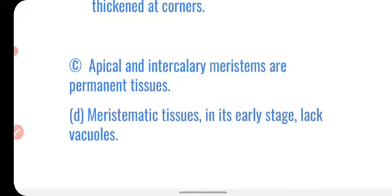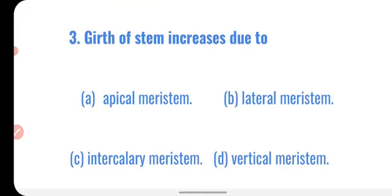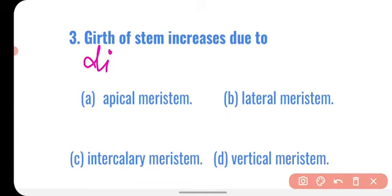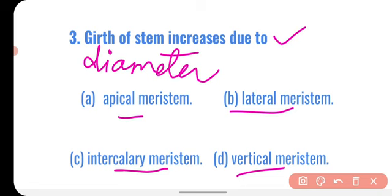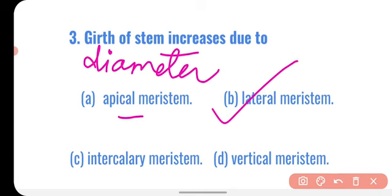Question number three: girth of stem increases due to which meristem? Options are apical meristem, lateral meristem, intercalary meristem, and vertical meristem. There are two types of growth in plants — primary and secondary. Secondary growth increases the girth of the stem, and that is due to the lateral meristem. So the correct answer is lateral meristem.